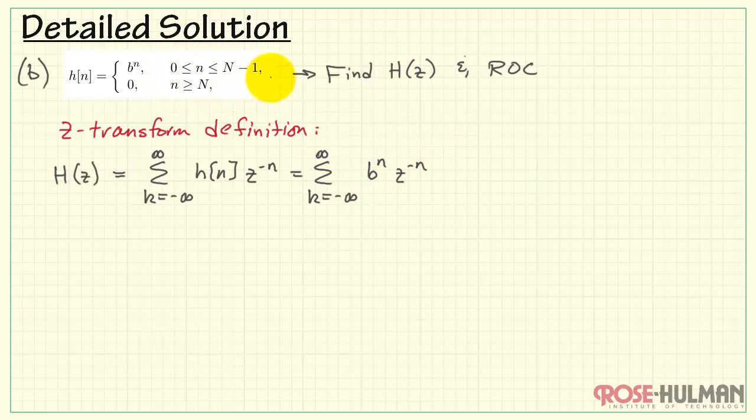We start the sum at N equals 0, or k equals 0 as far as the summation index is concerned. And we end up at N minus 1. Since N is 8, that means we end up at 7. Let's write this in terms of a common exponent. And now we can recognize this as the form of a geometric series.